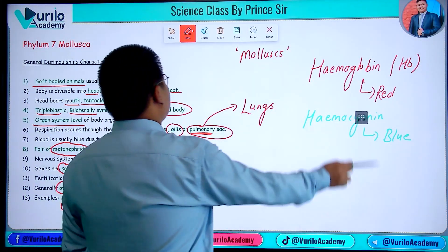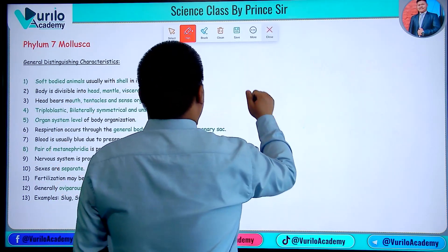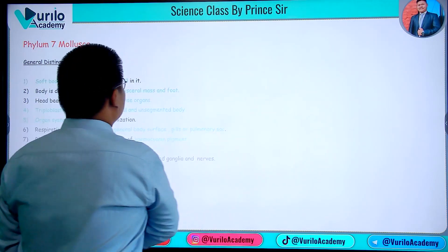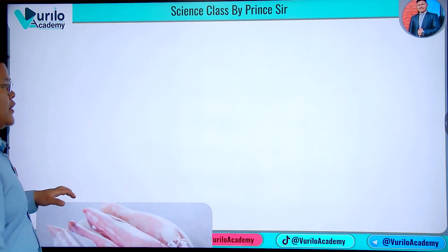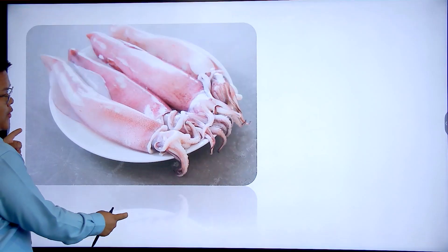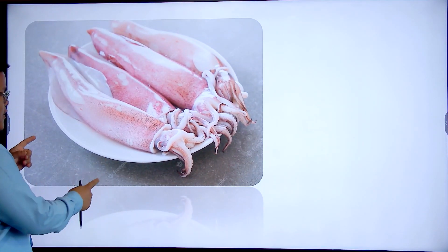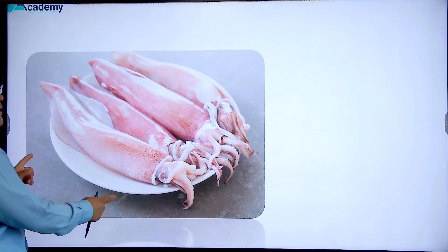Examples include snail and squid. These are the general characteristics of phylum Mollusca. Squid can also be found as seafood in Nepal.